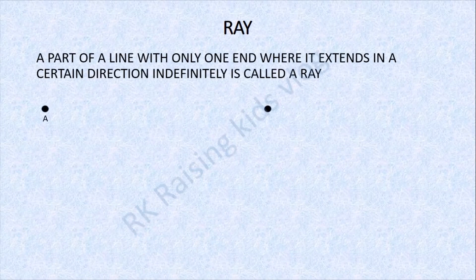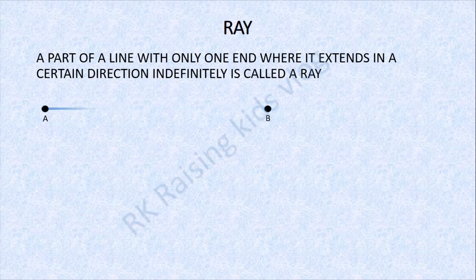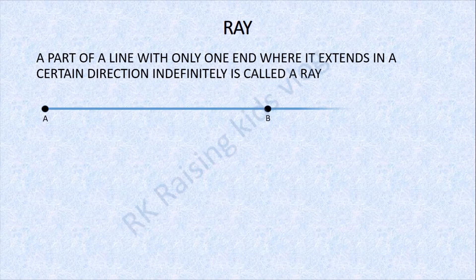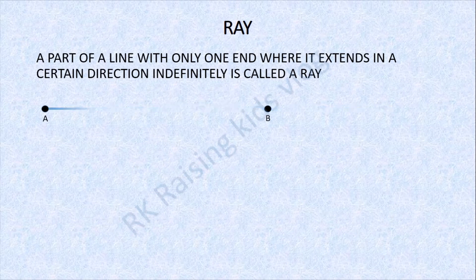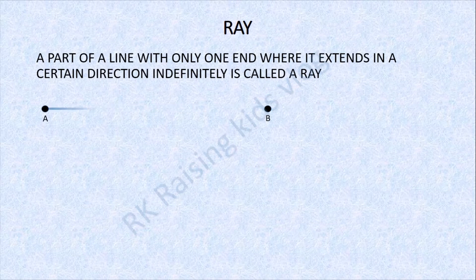Next: Ray. A part of a line with only one end where it extends in a certain direction indefinitely is called a ray. It extends from a point and then passes through another point. The point where it starts is called point A, and it passes through point B.